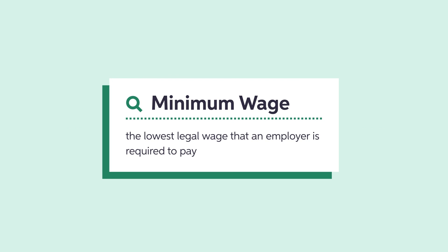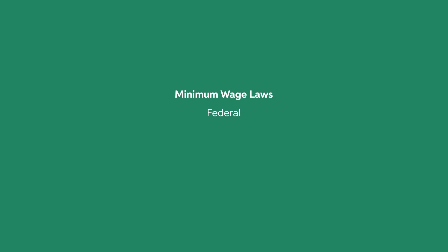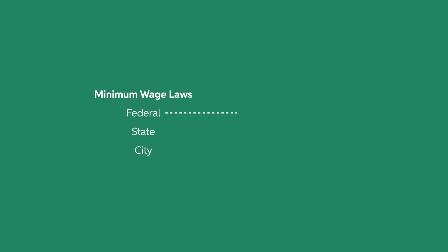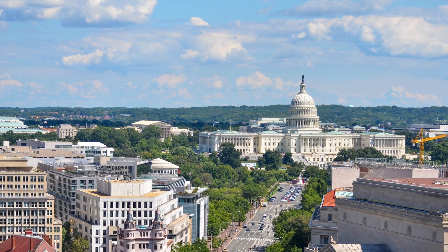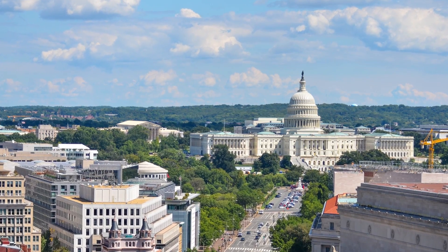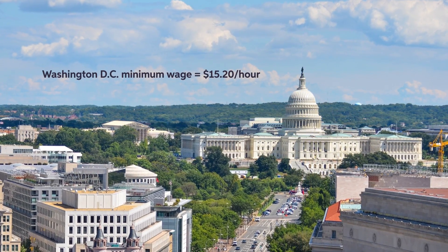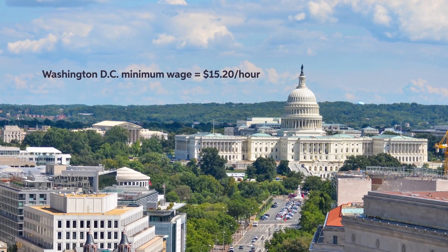Most countries in the world have laws that set a minimum wage, which is the lowest compensation that employers can legally pay their employees. In the U.S., there are federal, state, and city minimum wage laws. The federal minimum wage currently stands at $7.25 per hour and has not changed since 2009. The minimum wage can also be set at the state level, and many states do so. For example, Washington D.C. has the highest minimum wage at $15.20 per hour. The rationale behind a higher minimum wage is that it helps reduce poverty by increasing the income of minimum wage workers.